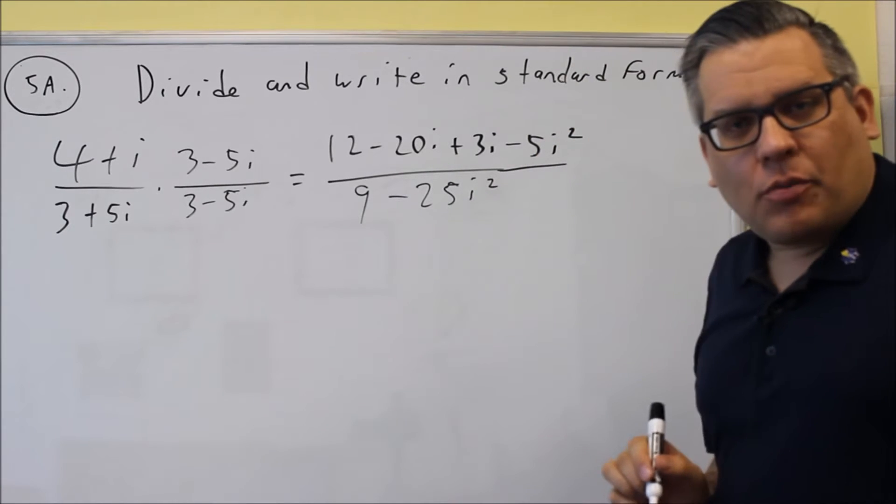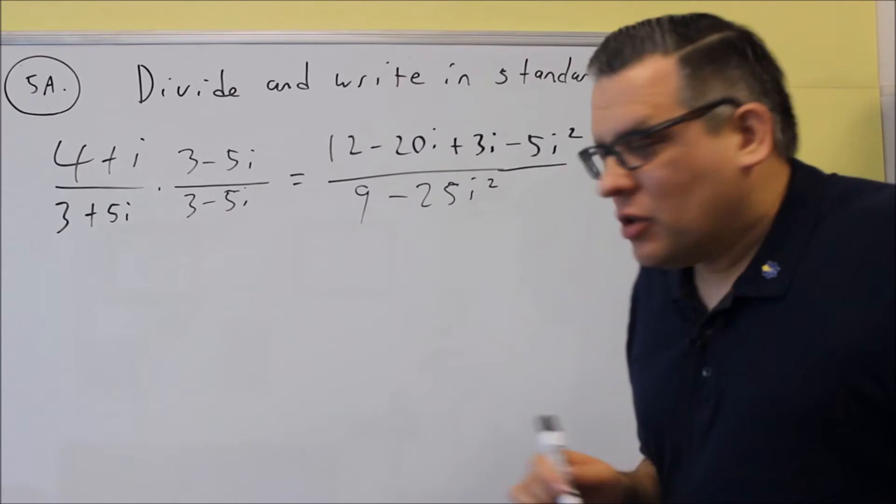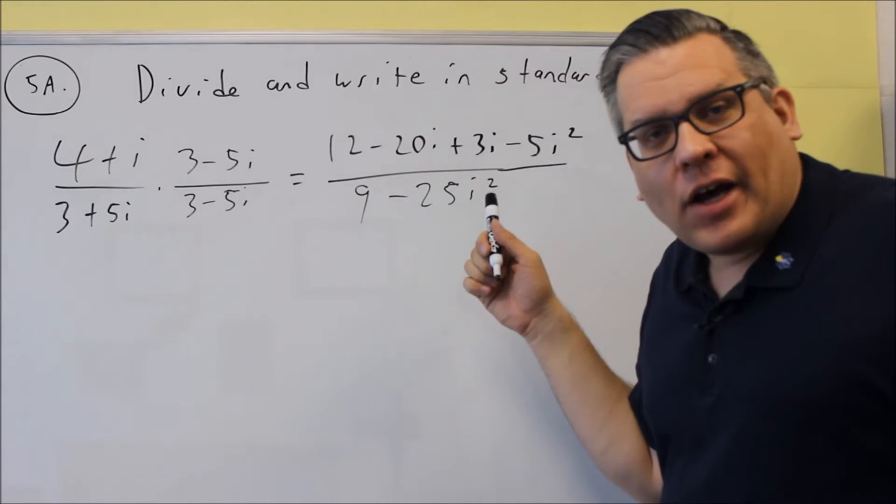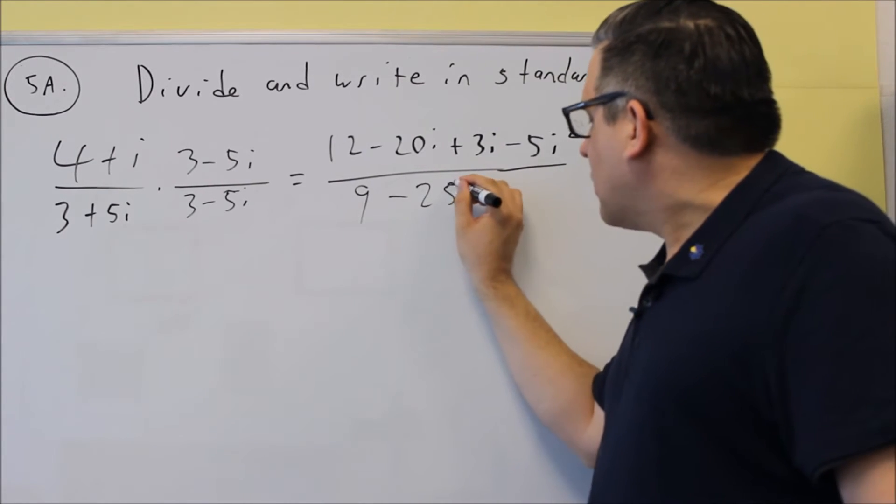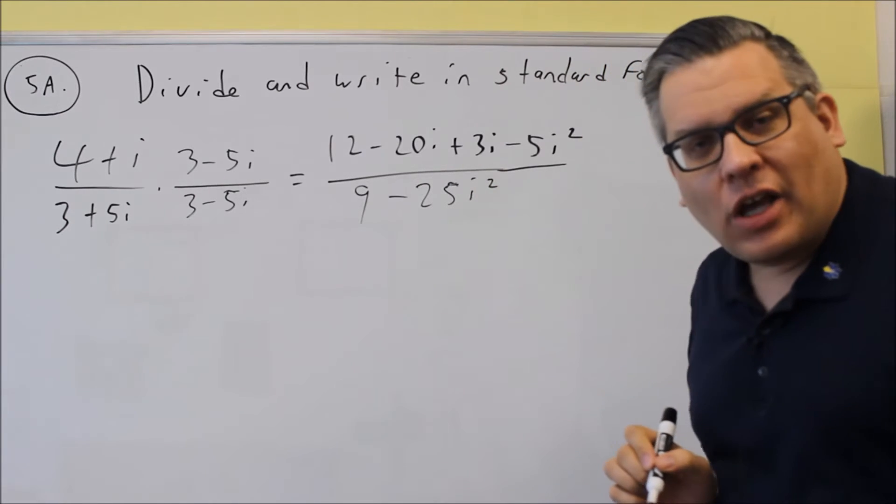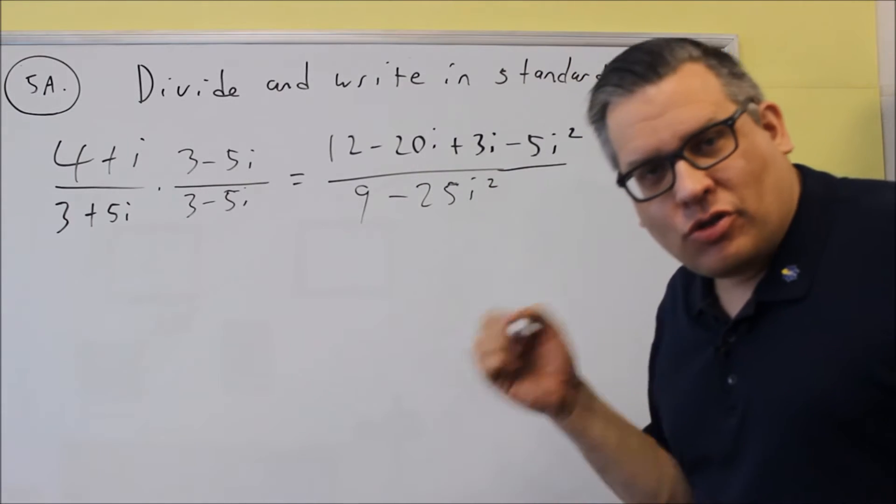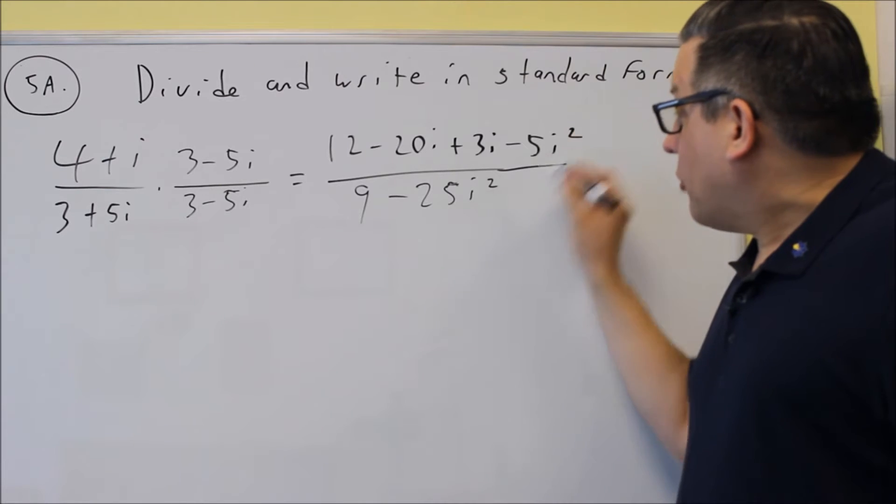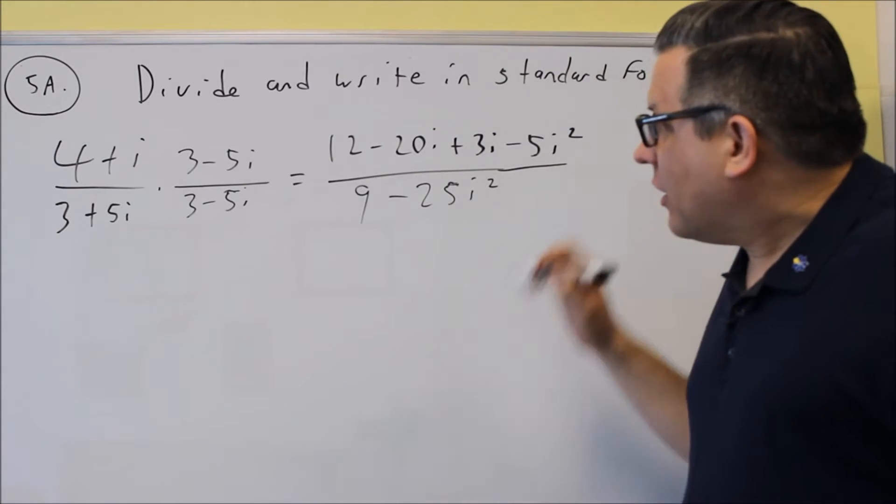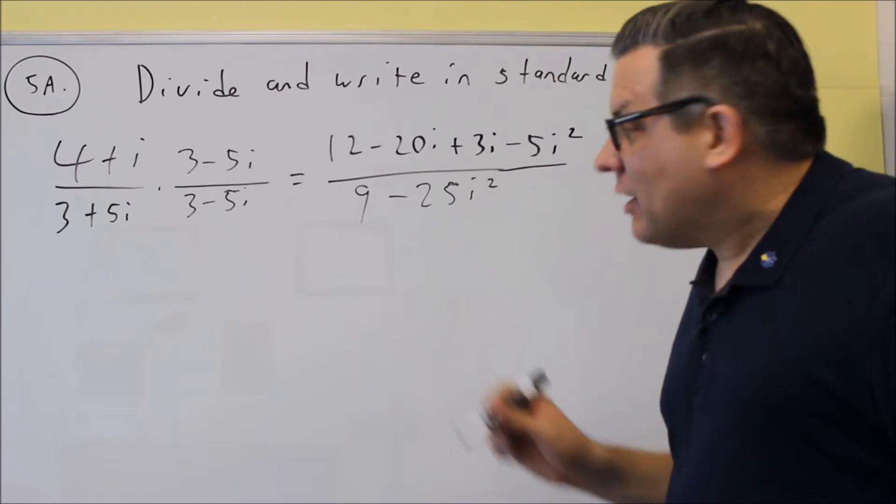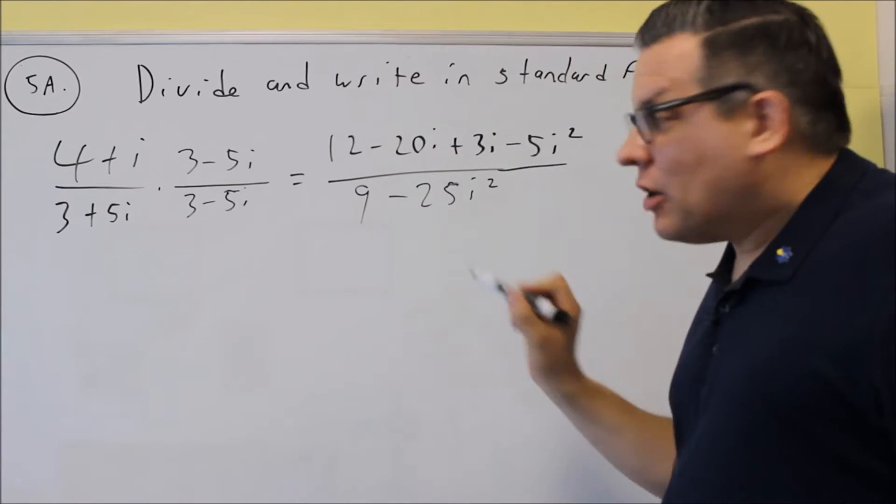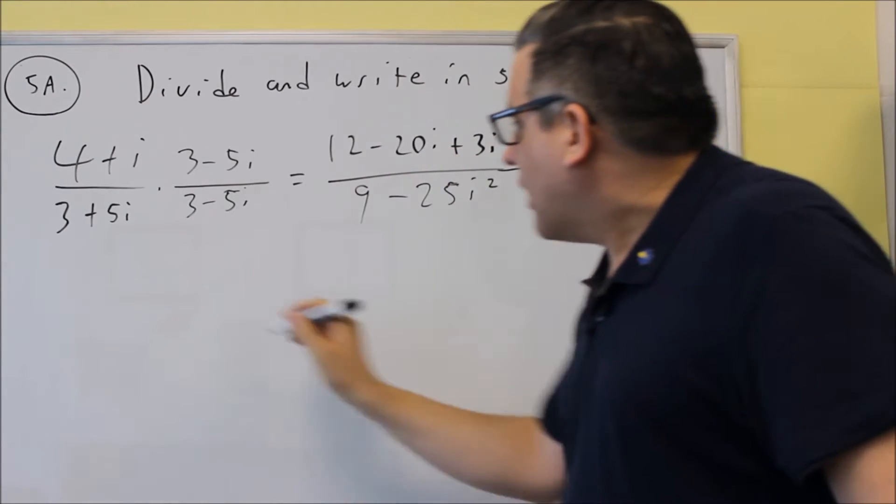So one of the problems we did earlier, we talked about different powers of i, and on that list, one of them I told you about was this i squared here on the end. So i squared is equal to negative 1, so therefore I'm going to go ahead and put negative 1 in for i on the top and the bottom. I'm also going to add the like terms that I see here, the negative 20i and the 3i I'll add together.